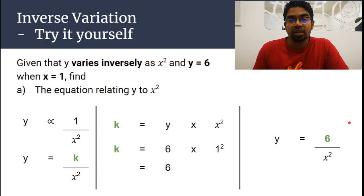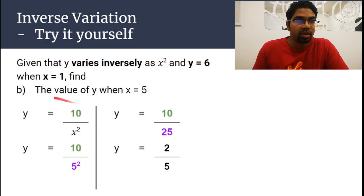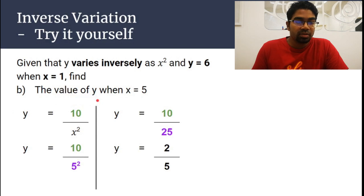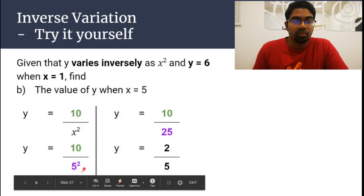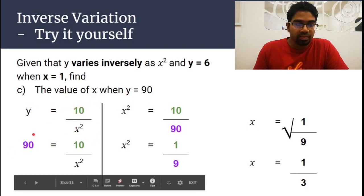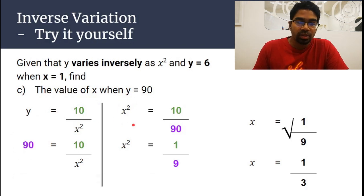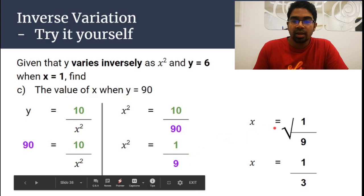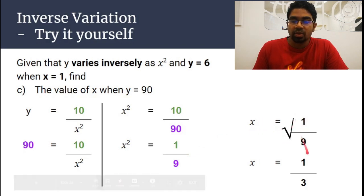Once we have the equation, we solve for other values. Find y when x = 5: substitute into y equals 6 over x squared. x squared = 25, so y equals 6 over 25... wait, using the equation y equals 10 over x squared as shown, y equals 10 over 25, which simplifies to 2 over 5. Find x when y = 90: substitute y = 90, rearrange to get x squared equals 10 over 90, which is 1 over 9. So x equals the square root of 1 over 9, which is 1 over 3.